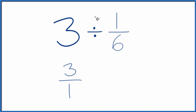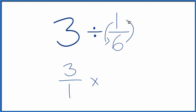Next, instead of division, we're going to multiply. And we're going to multiply by the reciprocal of 1/6. To take the reciprocal of a fraction, you move the numerator down and the denominator up. So we end up with 6 over 1 — that's the reciprocal of 1/6.